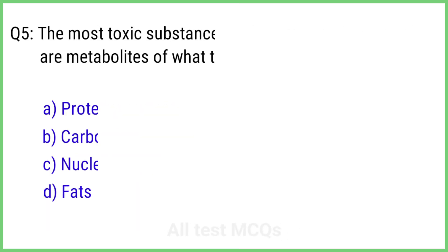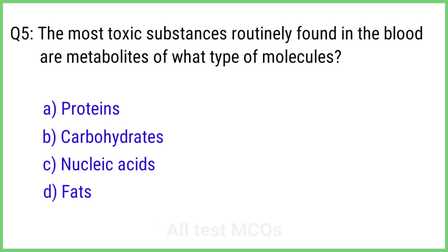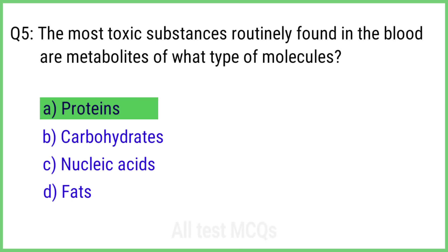Question 5. The most toxic substances routinely found in the blood are metabolites. What type of molecules? The right answer is option A: Proteins.